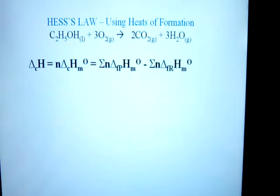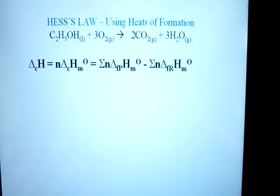There are two forms of Hess's Law. One is relatively easy to recognize because you are given the component reactions that you have to rearrange and manipulate. In the other one we get to use more of an algebraic form, in which case we get to use the heats of formation from our data table in order to calculate the energy of any reaction that we are given.